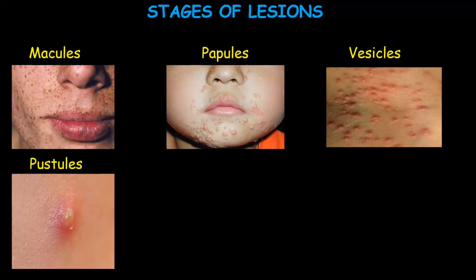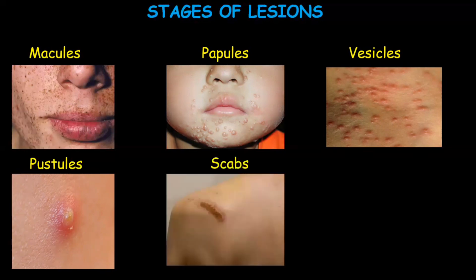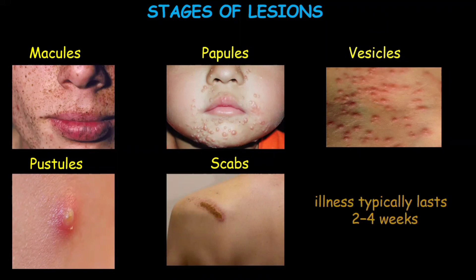Pustules are a bulging patch of skin full of a yellowish fluid called pus. The last stage is scab — a protective tissue covering that forms after the skin has been damaged. For example, when you scrape your skin, a blood clot forms which hardens into a protective crust called a scab. Tissue then regenerates, pushing out the scab to make room for new skin. This illness lasts 2 to 4 weeks.